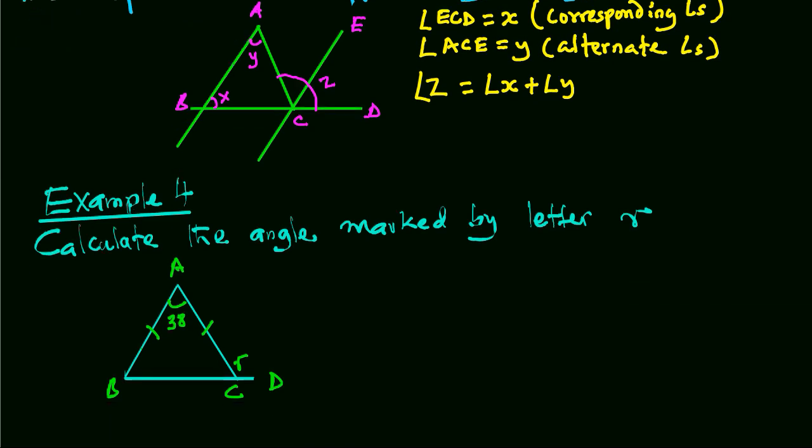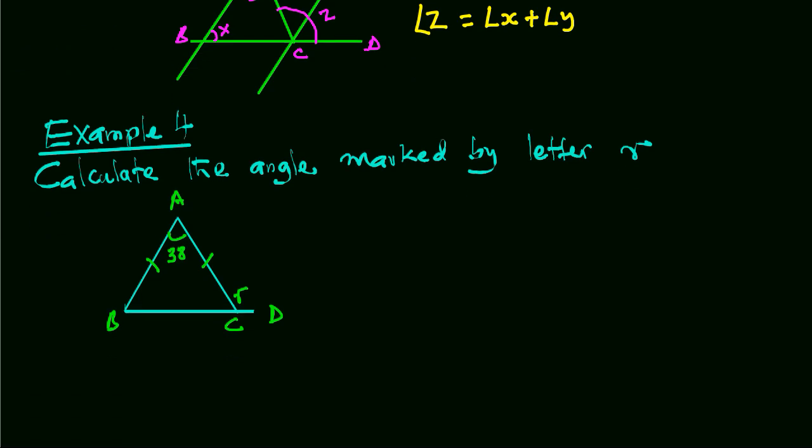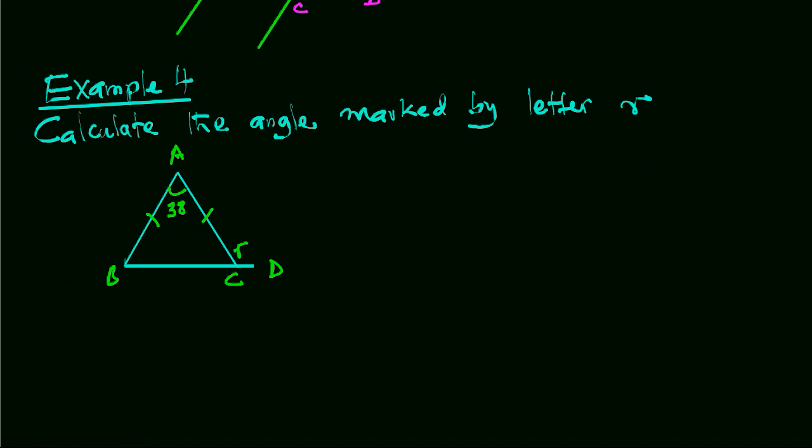Let's see this example. We have to calculate the angle marked R. In this case, triangle ABC is isosceles.